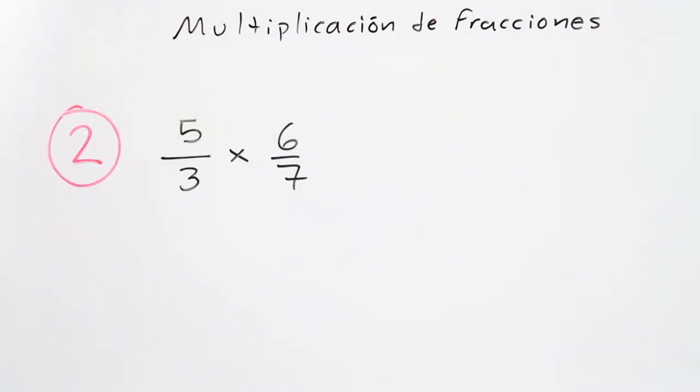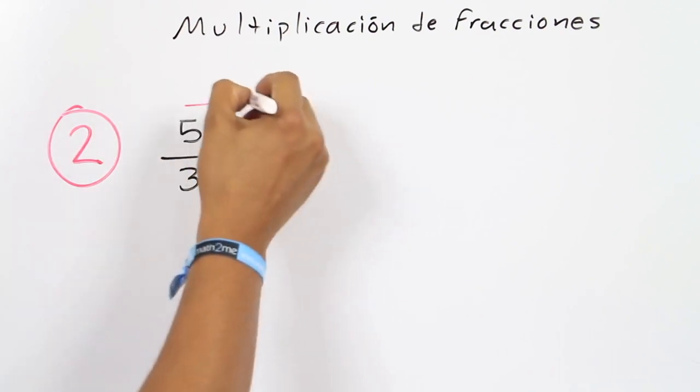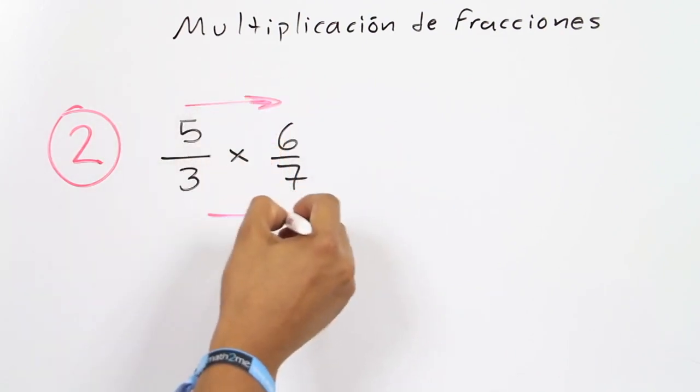Example number 2. Again, we have the multiplication of two fractions, so the procedure is the same. We have to multiply all the top numbers, then multiply all the bottom numbers.